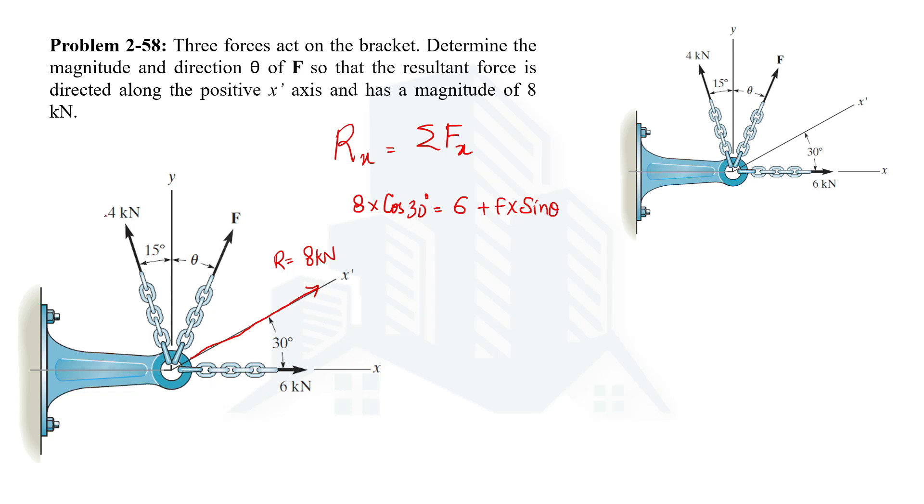Now the x component of 4 kilonewton will be negative because the x component will be along negative x-axis. So negative 4. Since this angle of 15 degrees is with positive y-axis, we will be having sine 15 degrees. So in this equation this is the only unknown.